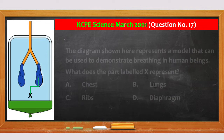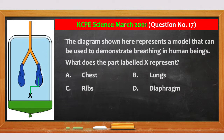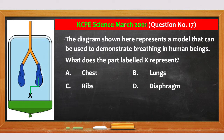The diagram shown here represents a model that can be used to demonstrate breathing in human beings. What does the part labeled X represent? A. Chest. B. Lungs. C. Ribs. And D. Diaphragm.